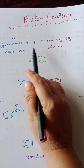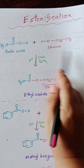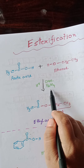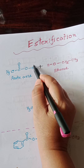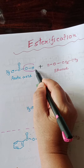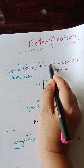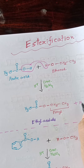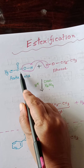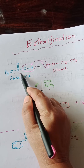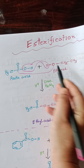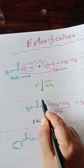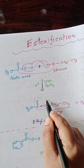Here we have taken acetic acid and ethanol. In the presence of concentrated sulfuric acid, the OH from the acid and the hydrogen from the alcohol leave as a water molecule. A new bond forms between the carbonyl carbon and the oxygen. This new bond forms the ester functional group.